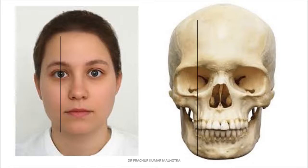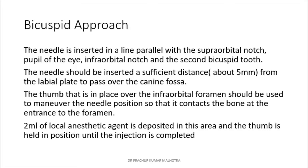In the bicuspid approach, the needle is inserted parallel to the line connecting the supraorbital notch, pupil of the eye, infraorbital notch, and the second bicuspid tooth. The needle should be inserted a sufficient distance from the lip to pass over the canine fossa. The thumb is placed over the infraorbital foramen and used to maneuver the needle so it contacts the bone at the entrance of the foramen. Once the foramen is located, 2 ml of local anesthetic agent is deposited and the thumb is held in position until the injection is completed.